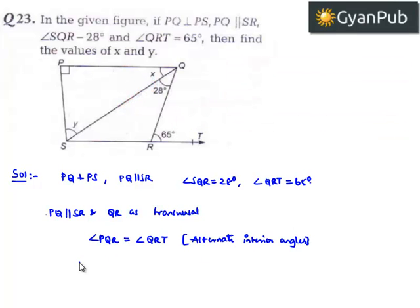That implies angle PQR is X plus 28 degrees, which equals angle QRT, which is 65 degrees. This means X equals 65 degrees minus 28 degrees, which equals 37 degrees. Therefore, X equals 37 degrees.